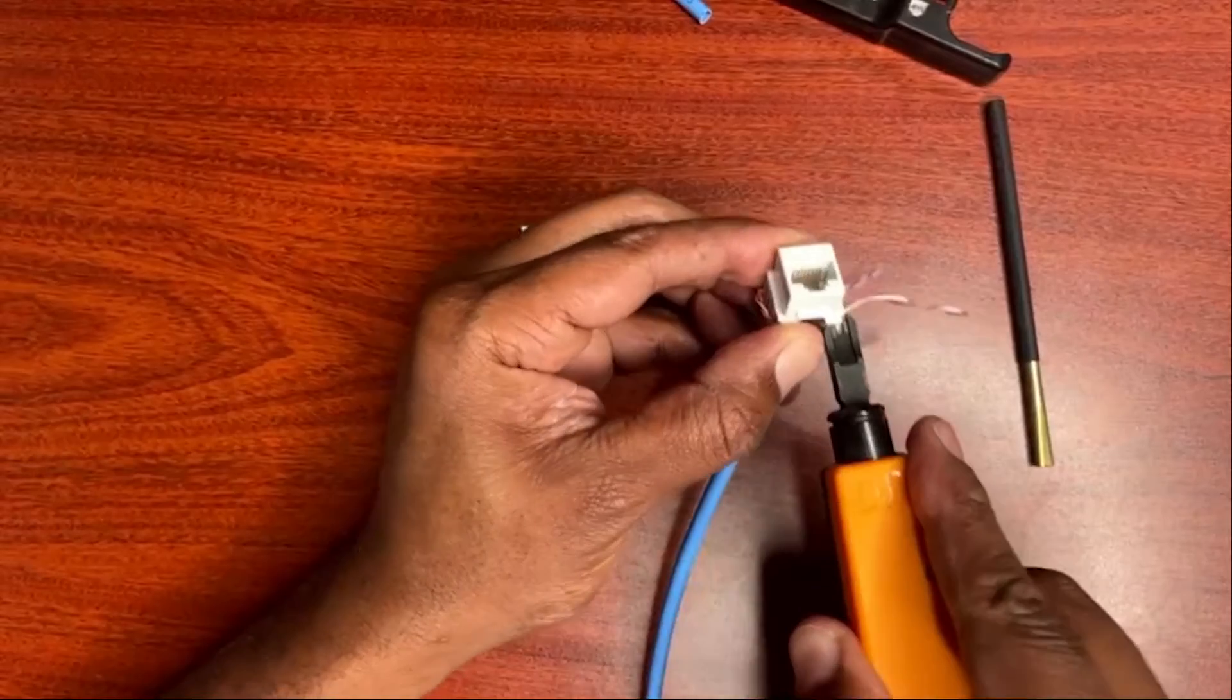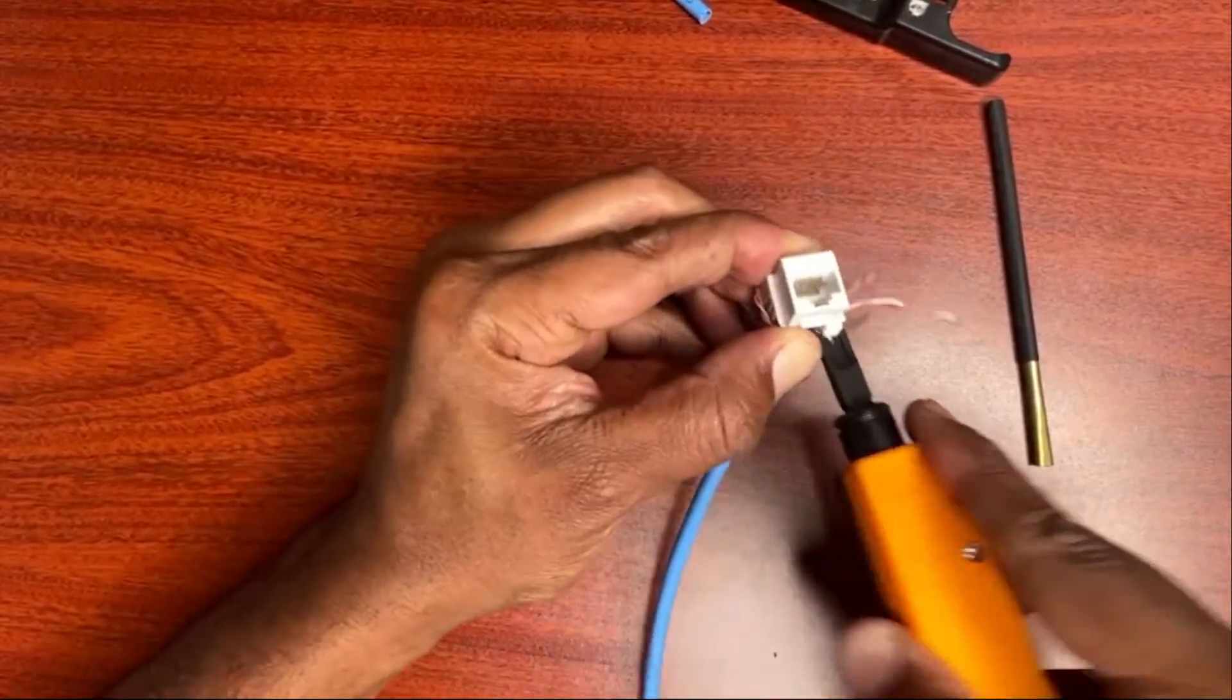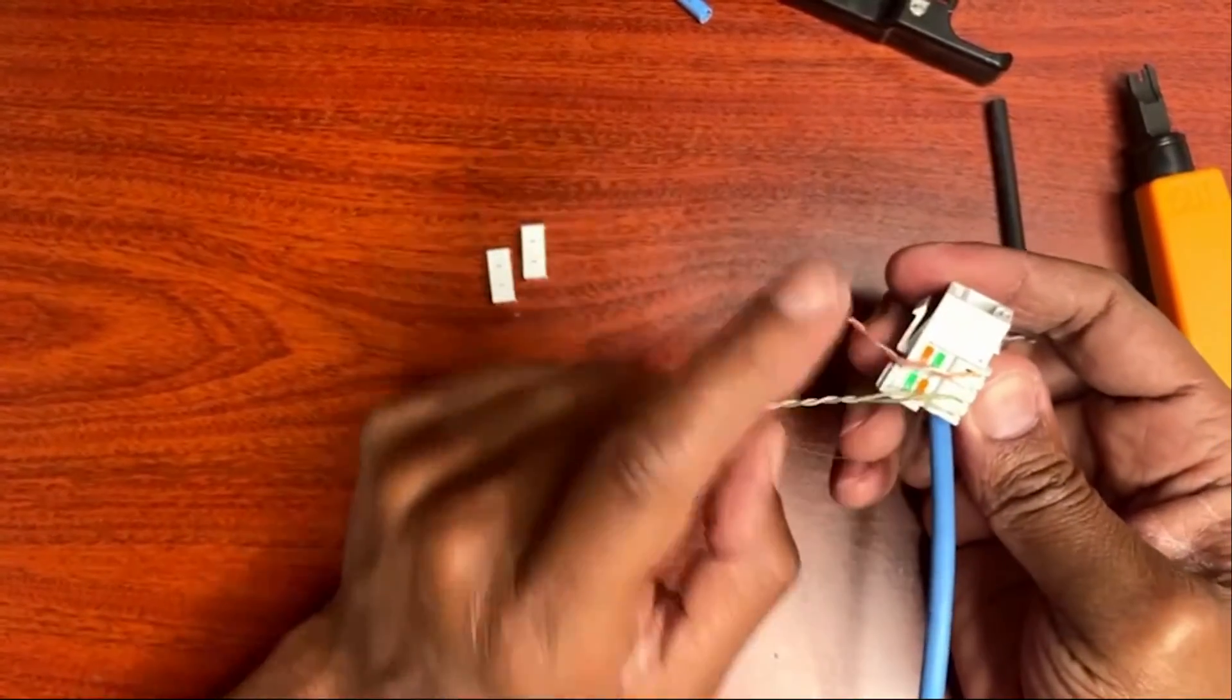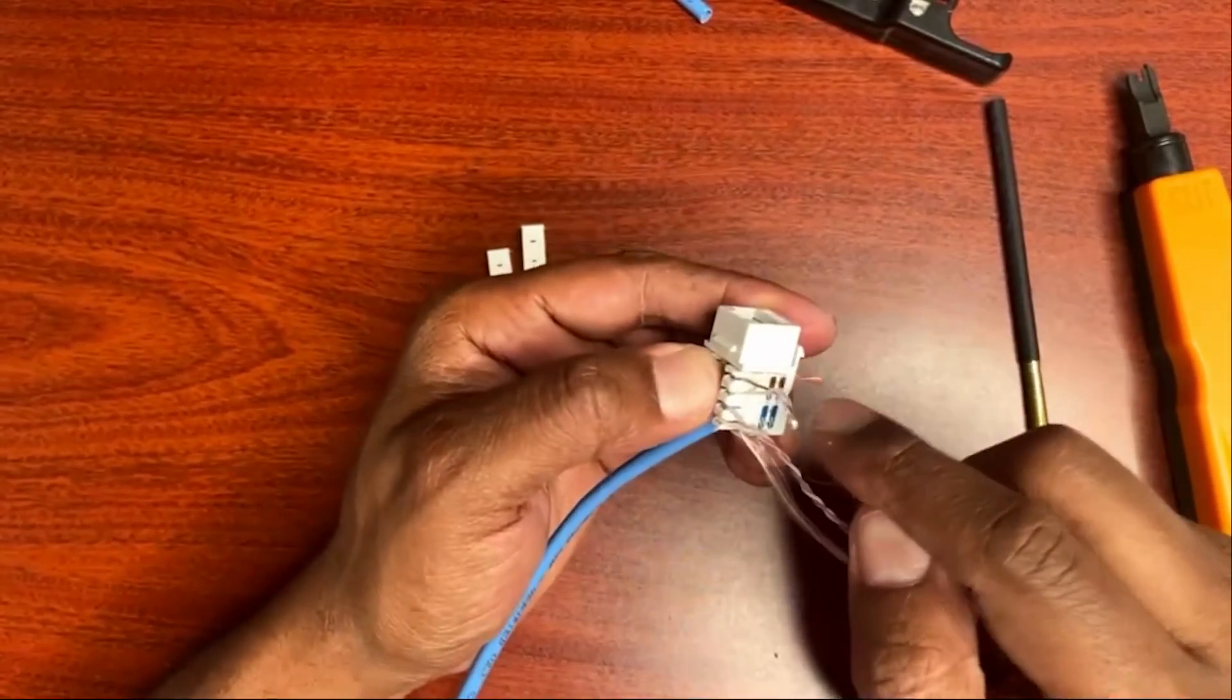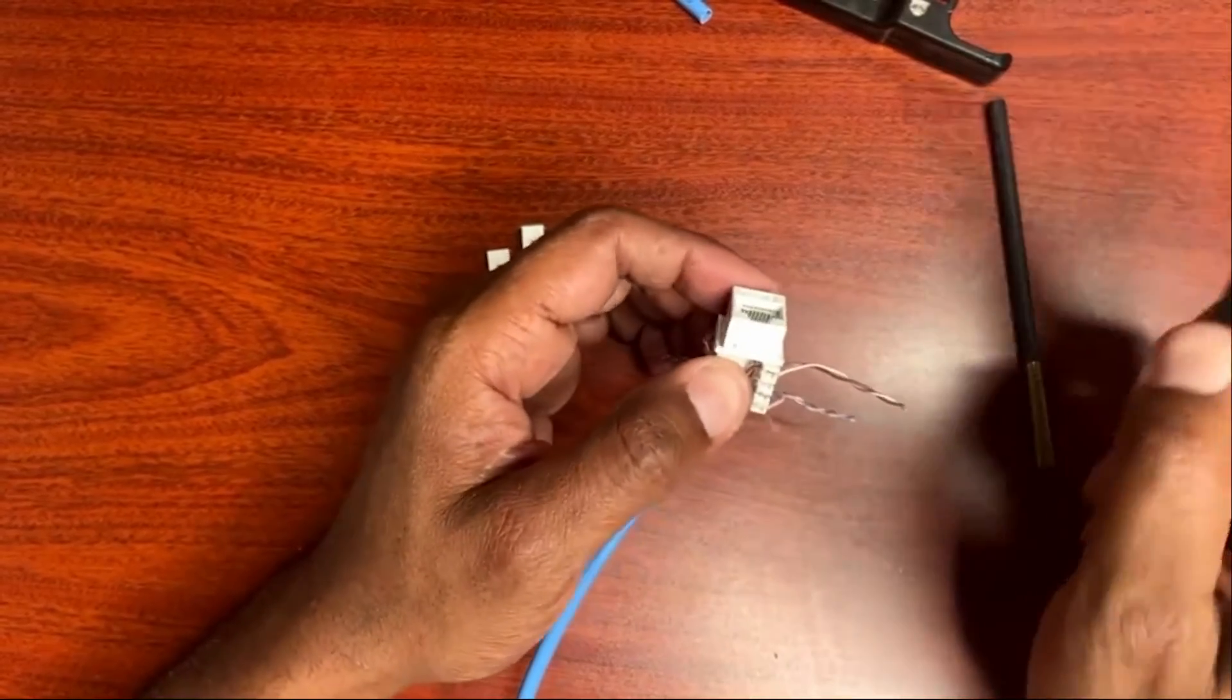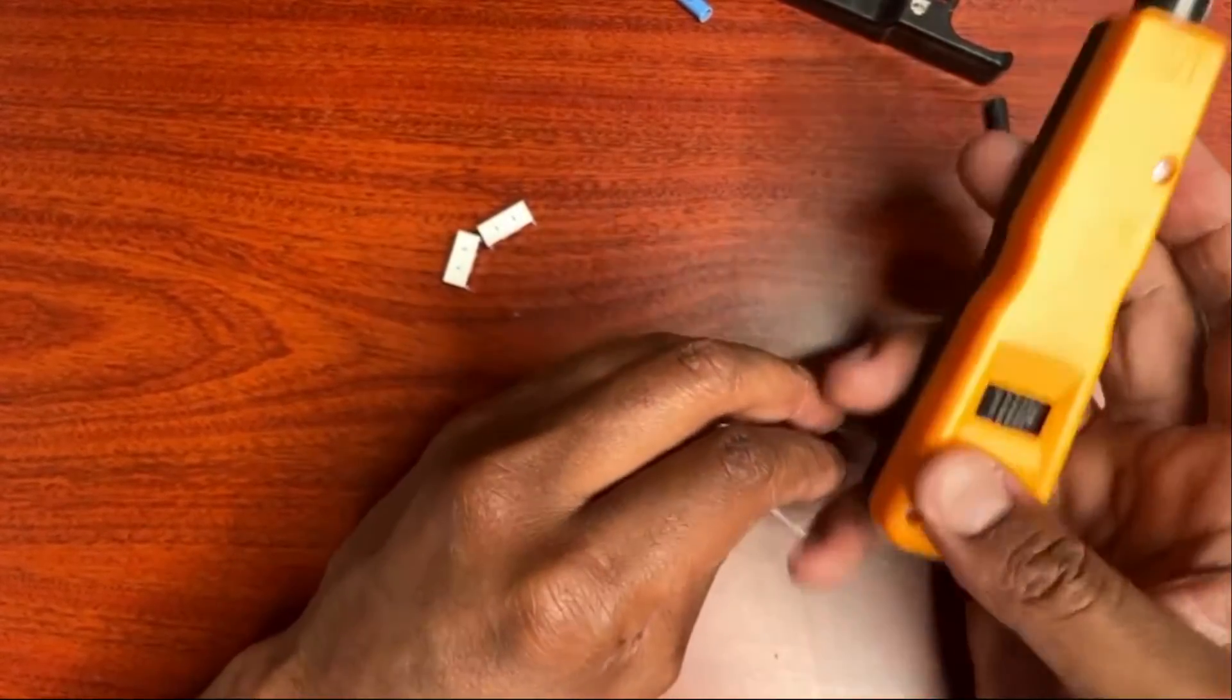Now I want to make sure: orange, orange white, green, green white, brown, brown white, blue, blue white. Now that I know that it's in there correctly, now I'm ready to terminate my cable. For the impact tool, you want to either low or high. Just to protect my table here, I want to make sure that's on low.